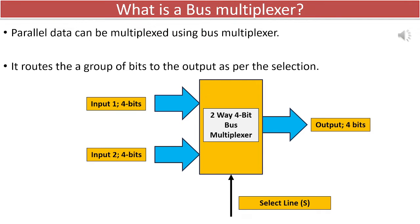A bus multiplexer is a device that combines digital information from multiple channels into a single channel. In this discussion, we'll focus on a 4-bit two-way bus multiplexer.